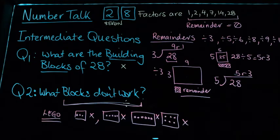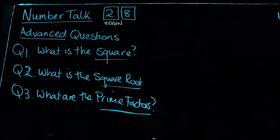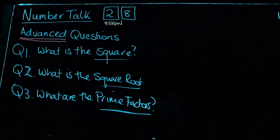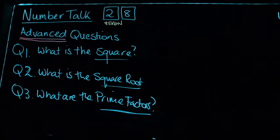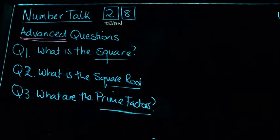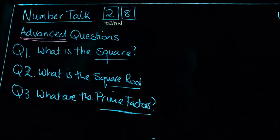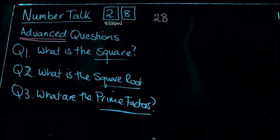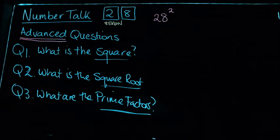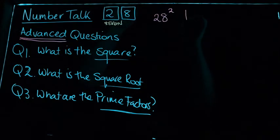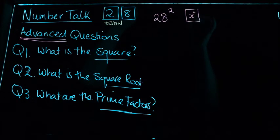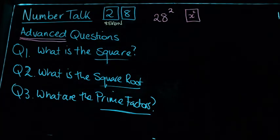Now we're on the advanced questions. As we develop these skills, we start thinking about: what is the square of this number? What is the square root? And what are the prime factors? These are more technical mathematical questions. For the square, we want to square the number — there's an x² button on your calculator, and I encourage you to use that to check your answer.